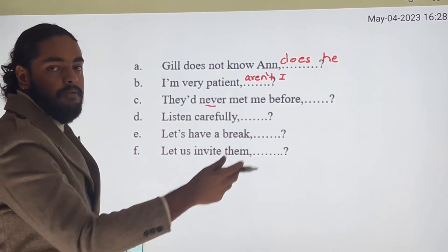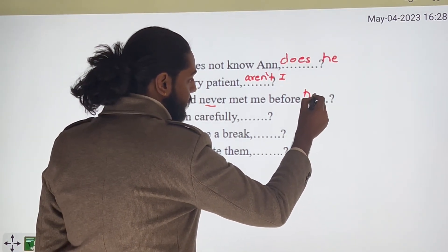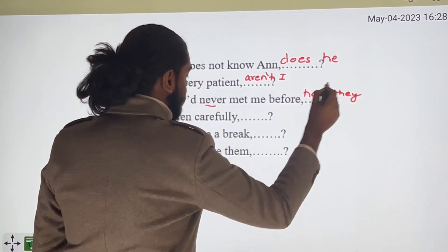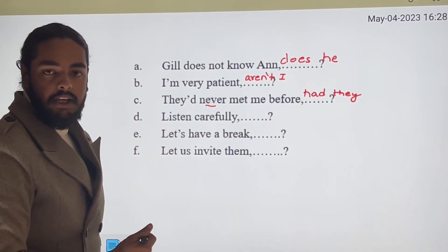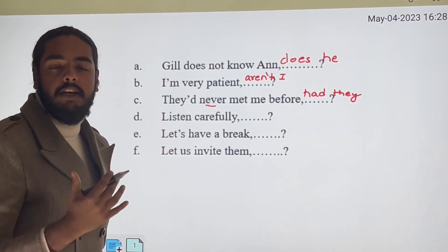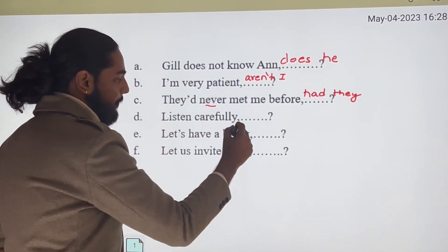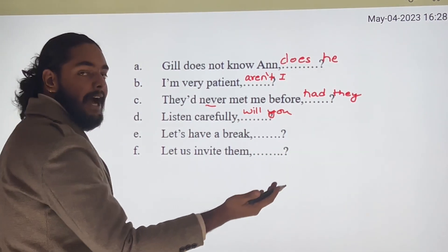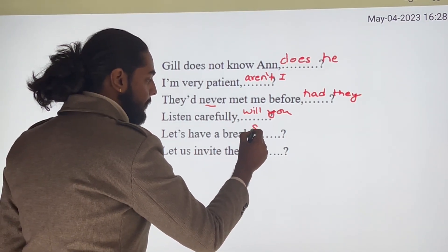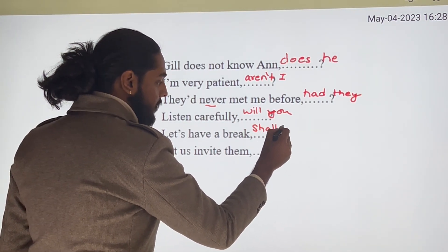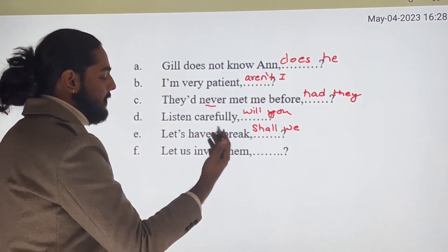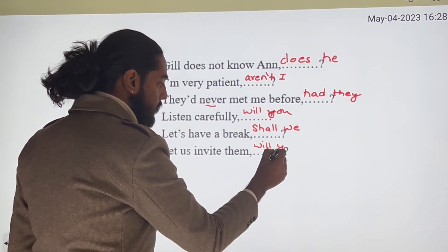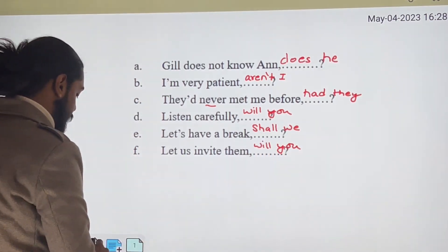Listen carefully — imperative sentence. For imperative sentences, the question tag is 'will you?' So: 'Listen carefully, will you?' Similarly, 'Let's have a break' — and 'Let us invite them, will you?'